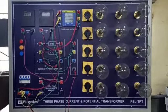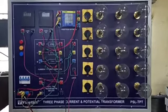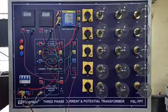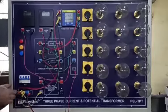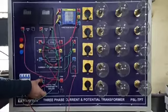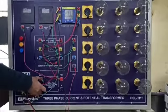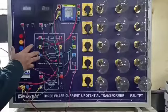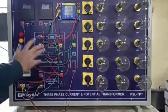So first of all, let us do the experiment for three-phase PT. In this experiment, what we have done is we have taken two phases, R phase and Y phase, and we have connected them to the input of potential transformer. The potential transformer and CT are put inside the panel, so you cannot see them.